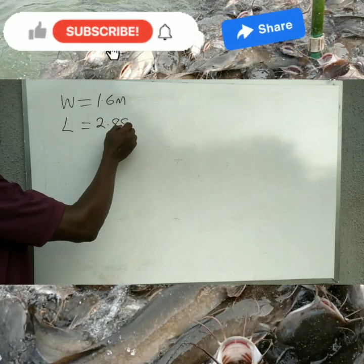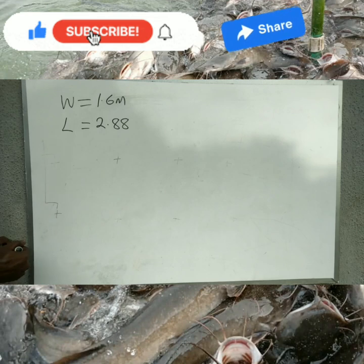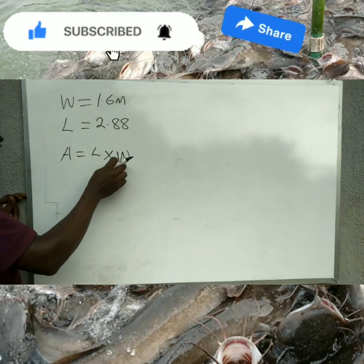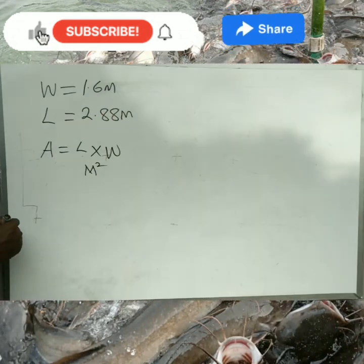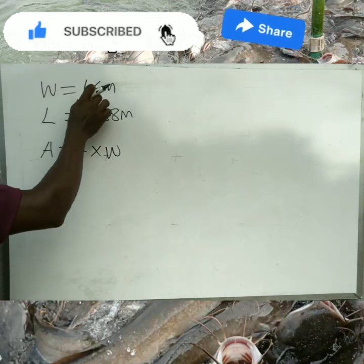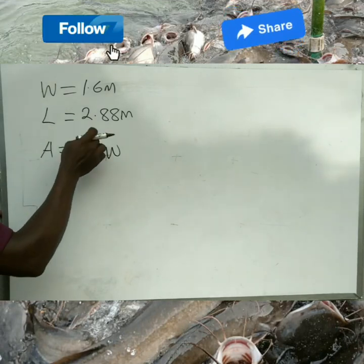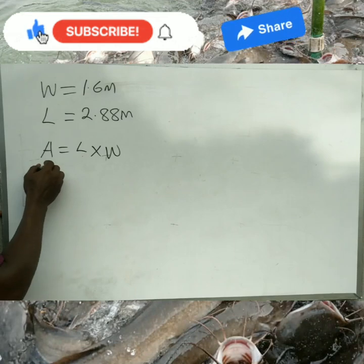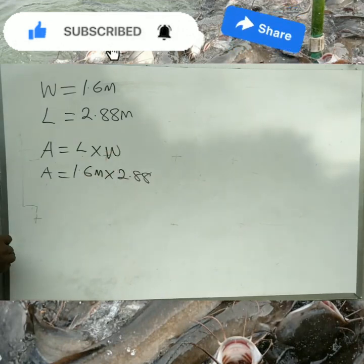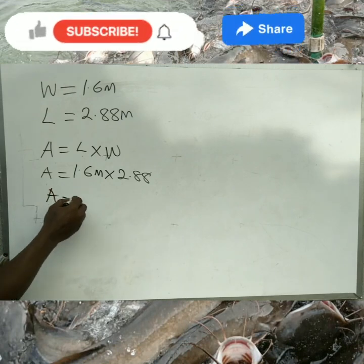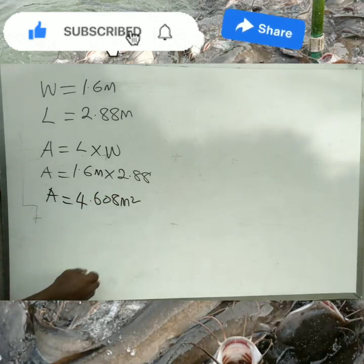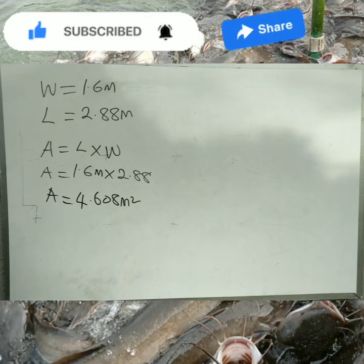To calculate the area of the pond, area equals length times width. This gives us the area in square meters (m²). So the area of our pond with a width of 1.6 m and a length of 2.88 m is: 1.6 × 2.88 = 4.608 m².